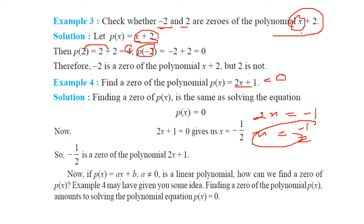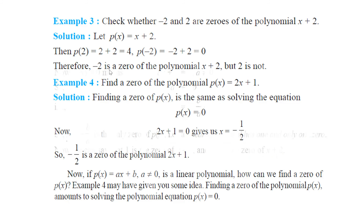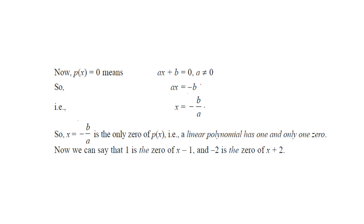For any linear expression, if you want to find the zero, just put ax plus b equal to 0. You will get x equal to minus b by a. So ax plus b equal to 0 gives x equal to minus b by a, which is the zero.